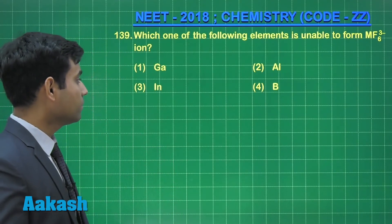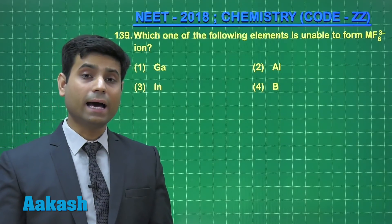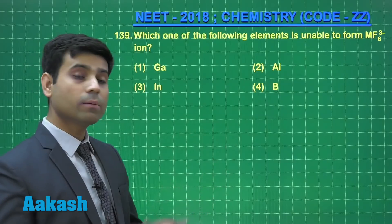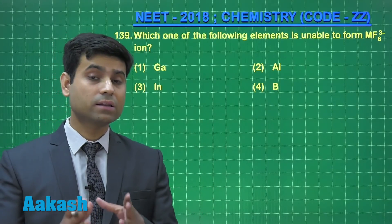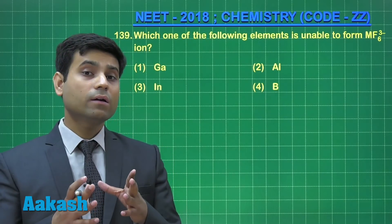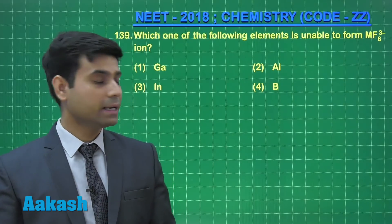If I talk about gallium, gallium has vacant 4d orbitals. If I talk about aluminium, it has vacant 3d orbitals. If I talk about indium, we have 5d orbitals with the indium.